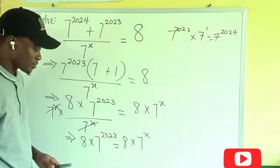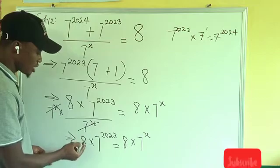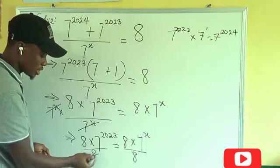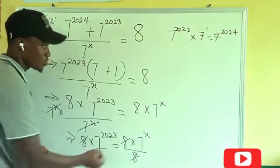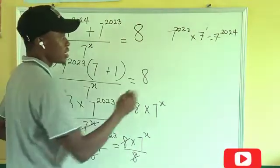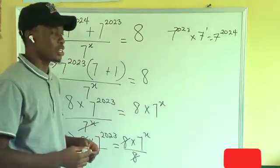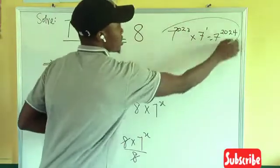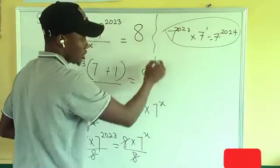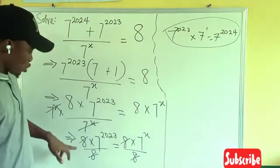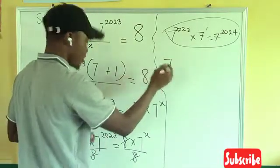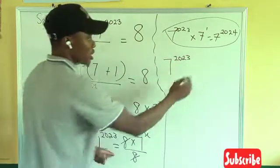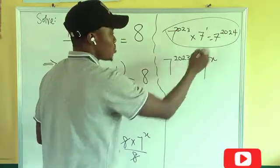Now we can divide both sides by 8. So dividing by 8, you can see that we have division by 8, division by 8, we cancel this, we cancel this. So what we are going to have is 7 to power 2023 equals to 7 to power x.